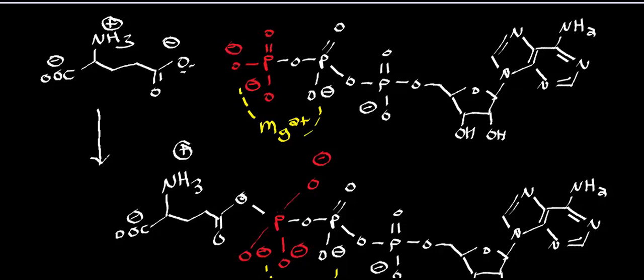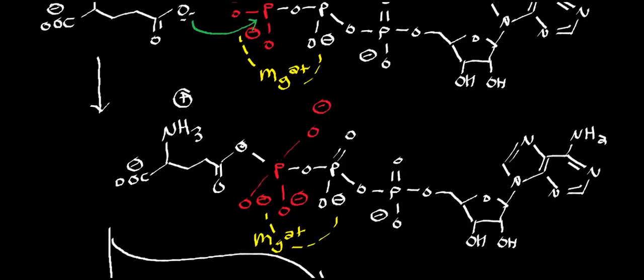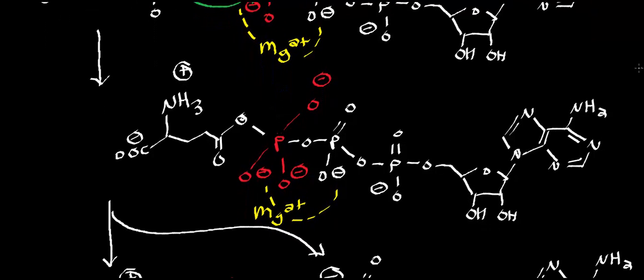Keep in mind that this is a magnesium dependent enzyme. The magnesium is used to stabilize the incoming ATP molecule. Remember that magnesium has a two plus charge, phosphates are negatively charged, so that stabilizing effect holds the ATP in close proximity so the glutamate lone pair can do a nucleophilic attack on the gamma phosphate of ATP. This right here is the gamma phosphate. The first step of the mechanism is nucleophilic attack on the phosphorus atom, and that's going to generate a trigonal bipyramidal intermediate.